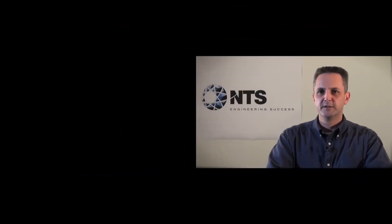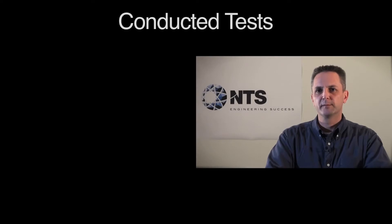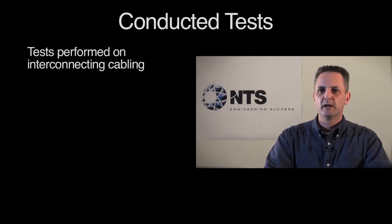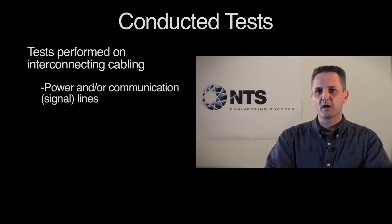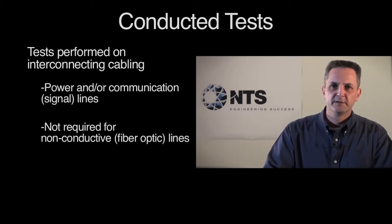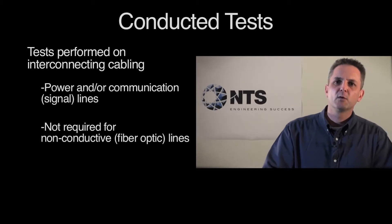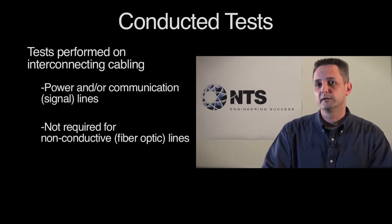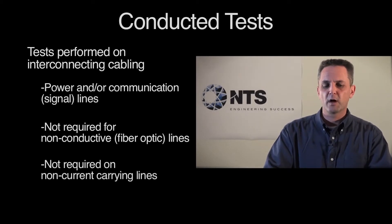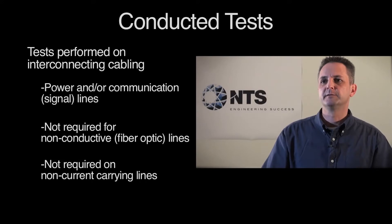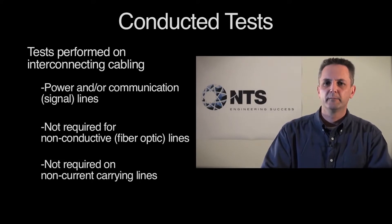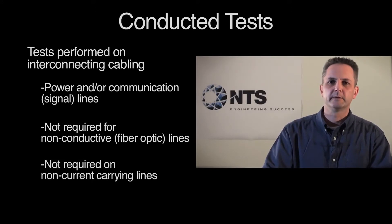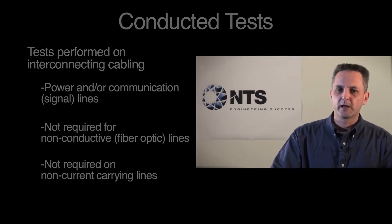Within these two types of tests — emissions and susceptibility tests — there are two classifications. One would be conducted tests, which are primarily performed on interconnecting cabling, such as communication lines and power lines. Testing for conducted emissions or immunity is not required on fiber optic lines, non-conductive lines, and is not required on non-current carrying lines, such as metallic hoses or hydraulic lines, or even grounding straps in most cases.